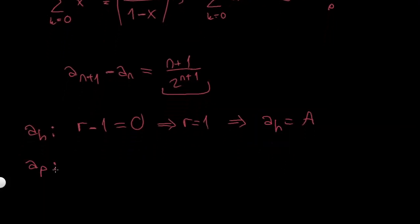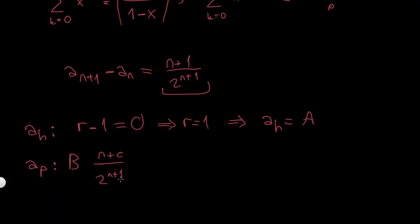For the particular solution I should be careful. I'll multiply by a constant and write the form as (n+c) over 2 to the n+1, using n+c to cover every case. For simplicity I can write this as b times (n+c) over 2 to the n, since I can always absorb the factor of 1/2 into the constant b. This gives a fair particular solution.